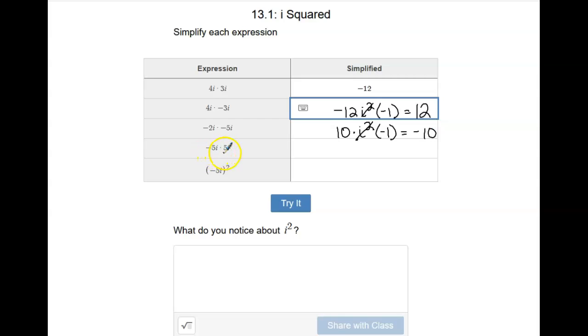Next one, negative 5i times 5i. Negative 5 times positive 5 is negative 25, i times i is i squared. i squared is the same thing as multiplying by negative 1. So this would give us a positive 25.